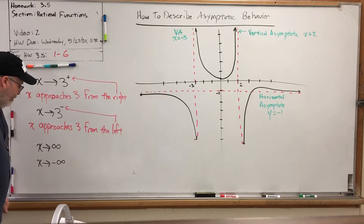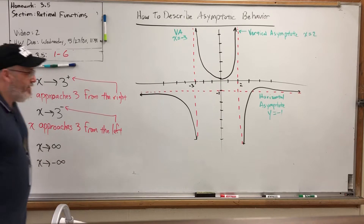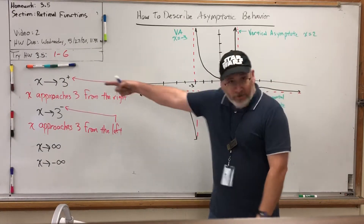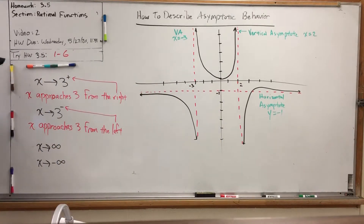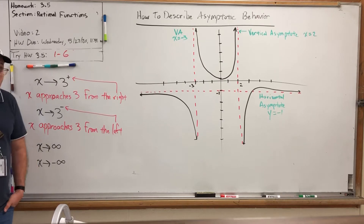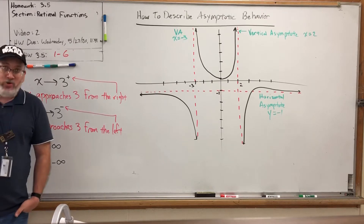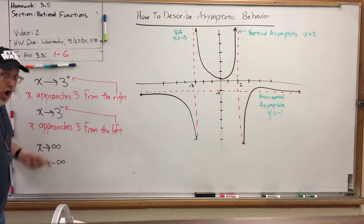There are four main types. Two of them are easy: x approaches infinity, or x approaches negative infinity — that just means x goes really far that way, or really far that way. But x can also approach a number, and when you approach a number, you can approach it from either the left side or the right side. For those of you heading towards calculus, you will see this notation early and often, but for our purposes it's just going to describe some algebraic phenomena.